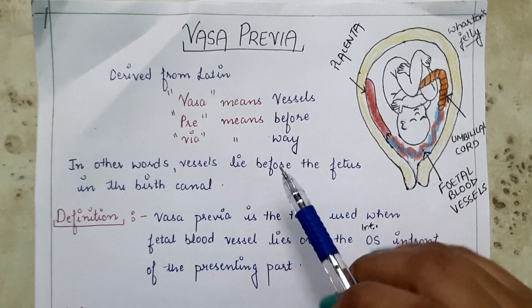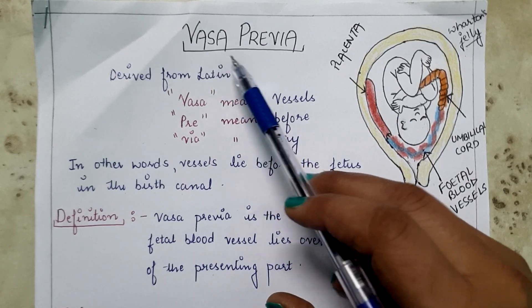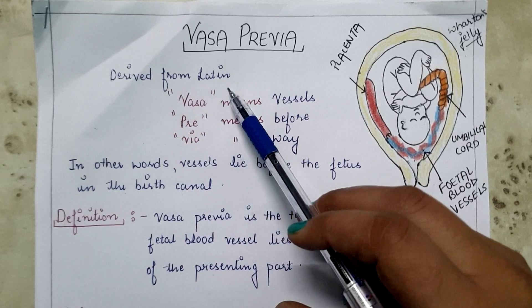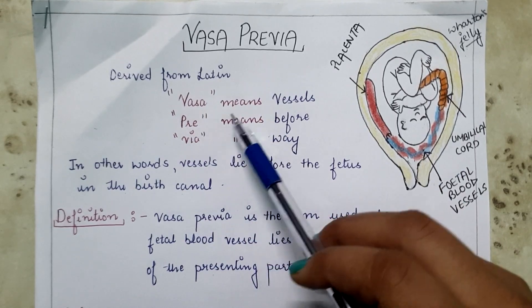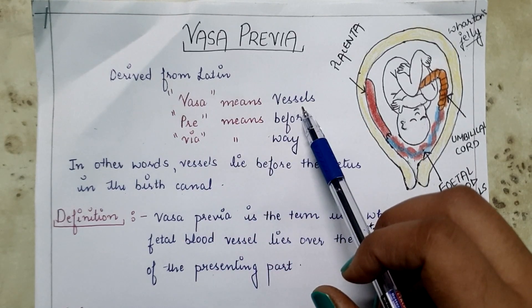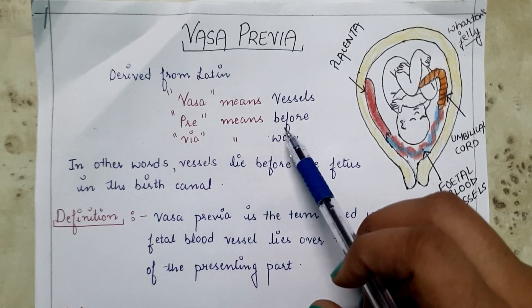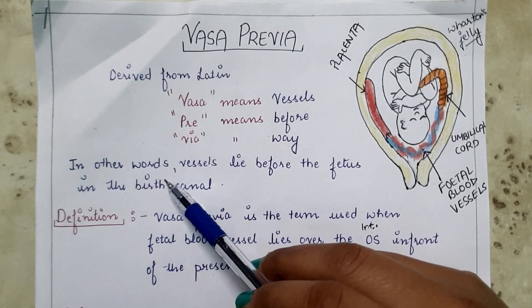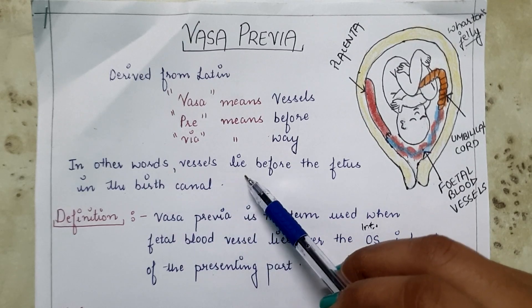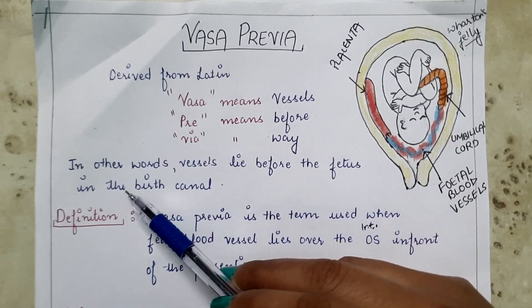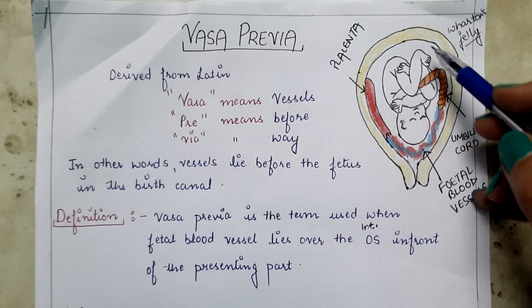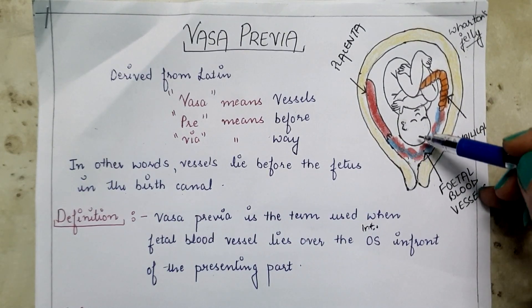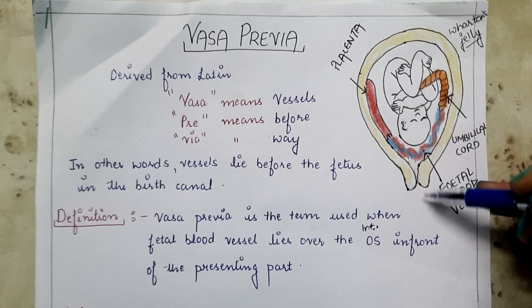Hello, my dear students. In this lecture I will discuss the topic Vasa Previa. The word 'vasa previa' is derived from Latin: 'vasa' means vessels, referring to fetal blood vessels, 'pre' means before, and 'via' means way. In other words, fetal blood vessels lie before the fetus in the birth canal, as you can see in this diagram.